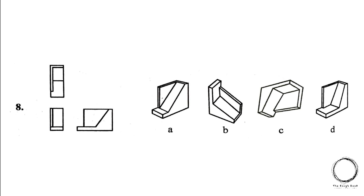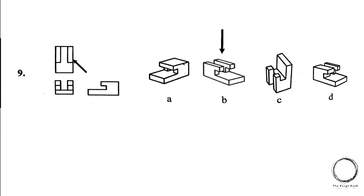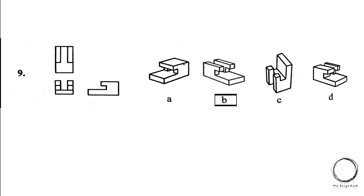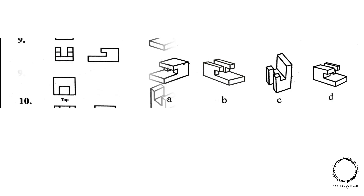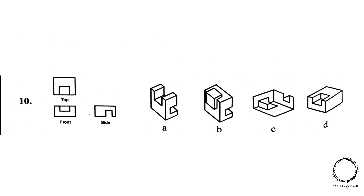Question number 8: looking at the top view, option A and D qualify, but the line which divides the square into half is in option D. Cross-checking with the front and the side view, the right answer is option D. Next, looking at the top view, only option B has equal number of rectangles at both sides. Checking with the front and side view, option B is the right answer.